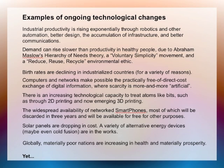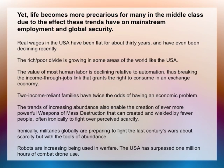Industrial productivity is rising exponentially through robotics and other automation, better design, the accumulation of infrastructure, and better communications. Demand can rise more slowly than productivity as people decide there is a law of diminishing returns for more material goods. Birth rates decline in industrialized countries. Computers and networks allow the almost free distribution of information to everybody on the planet. There is an increasing ability to treat atoms like bits, and 3D printing is rapidly expanding. Smartphones are becoming essentially free, and solar panels are dropping in cost.